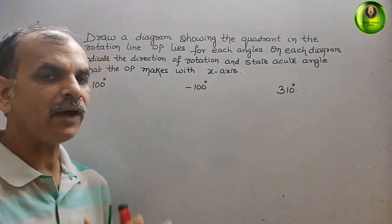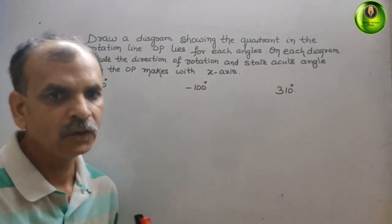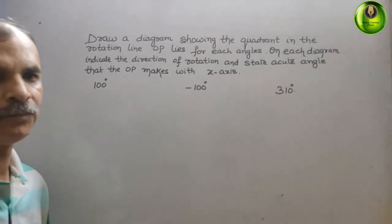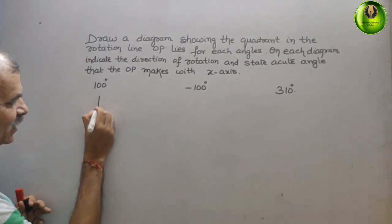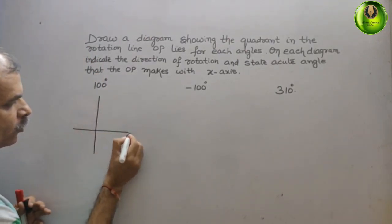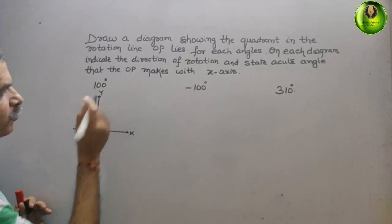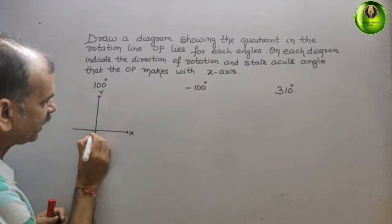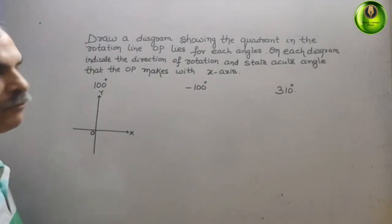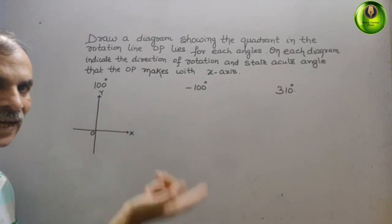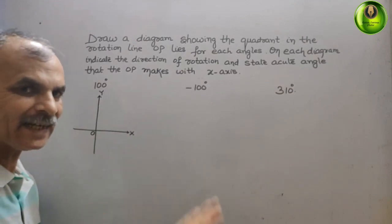So now what we have to do: we have to draw the X and Y axes, that is the coordinate system. Here they have given us 100 degrees. This is your X-axis and this is your Y-axis, and this is your center, that is O. Now what they have told us is that we have to draw a line OP, indicating the direction also.